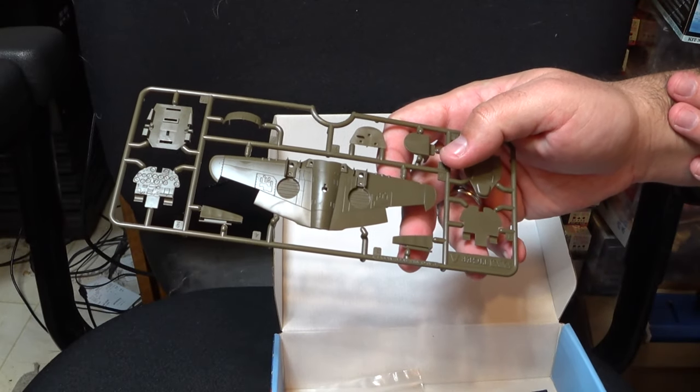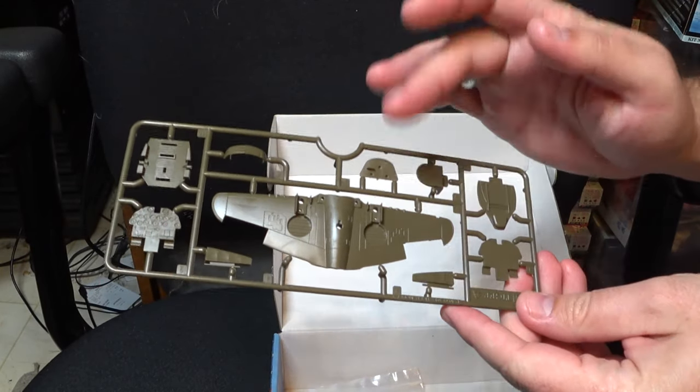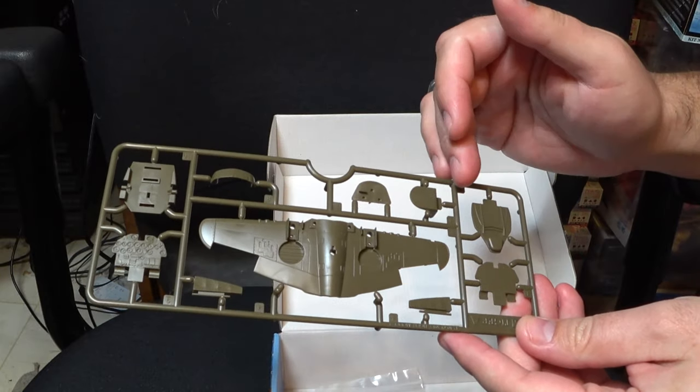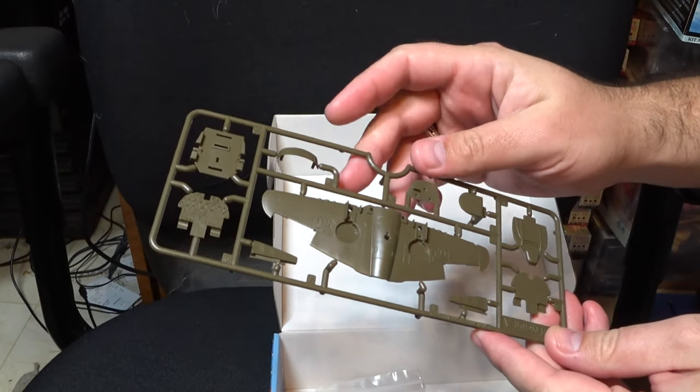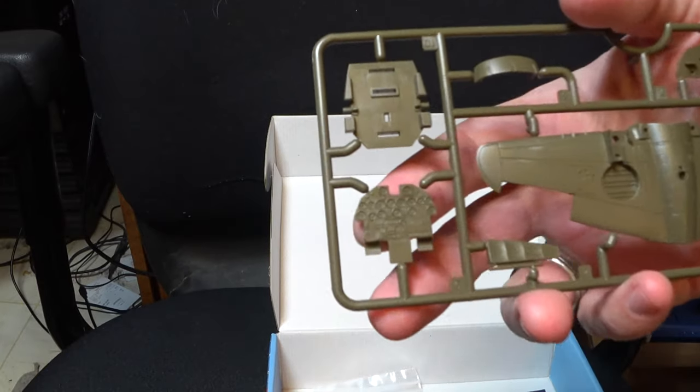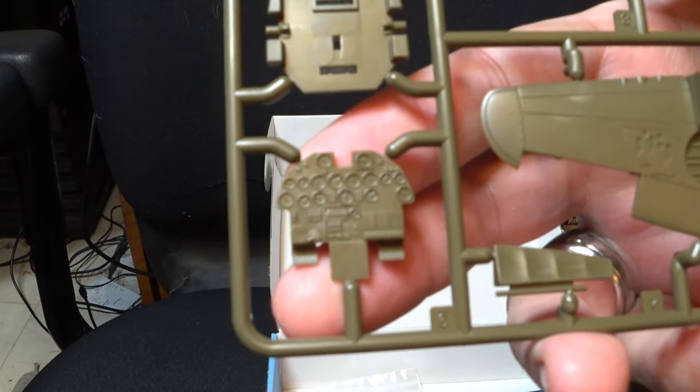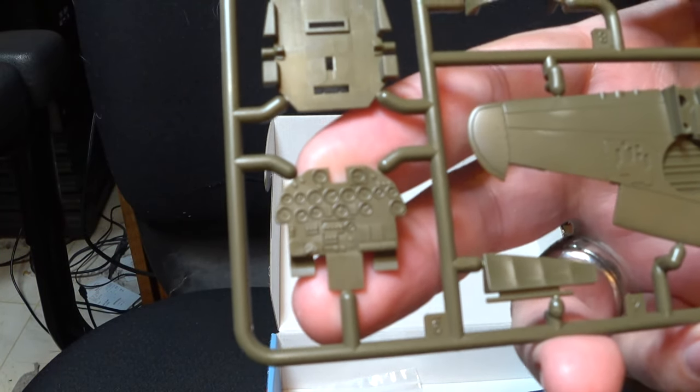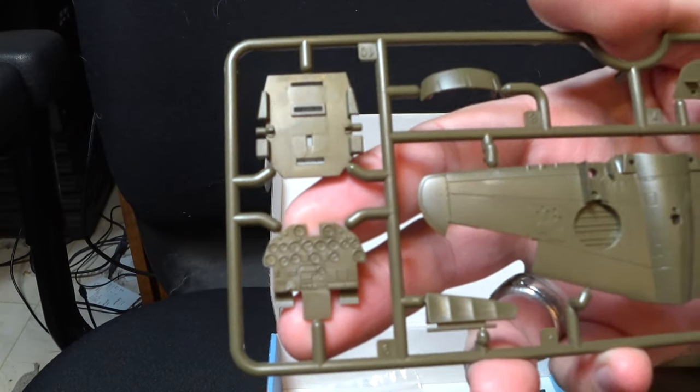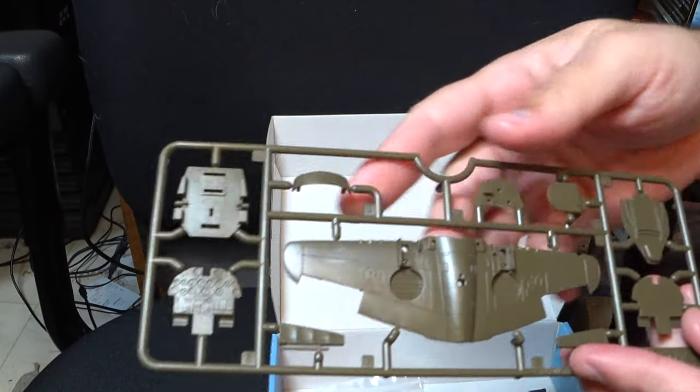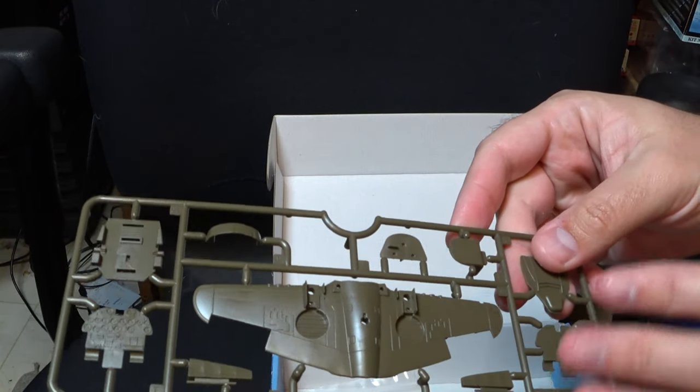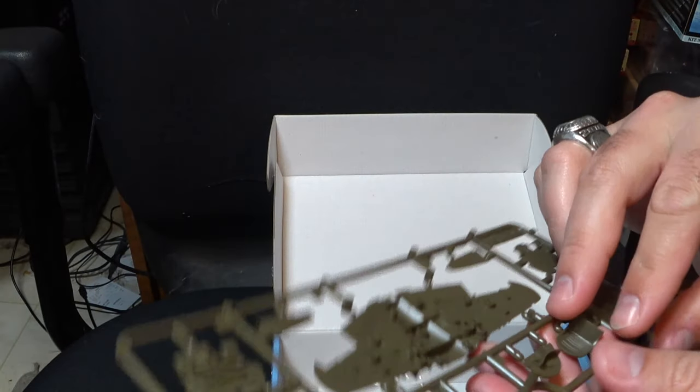Last up, as far as the sprues go, we have our bottom wing half with all the fixings there. A surprisingly nicely detailed instrument panel. I was pleasantly surprised there, as well as the rest of the cockpit parts, and a few other odd end detailing parts.